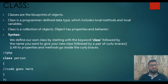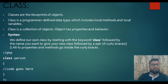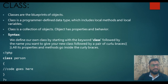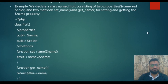The syntax that you can see on the screen has opening and closing PHP tags. Under these tags, we have defined the class 'person' with the keyword 'class'. In curly brackets, the code has to be executed. We define our own class by starting with the keyword 'class', followed by the name you want to give to your new class, followed by a pair of curly brackets. All its properties go inside the curly brackets.